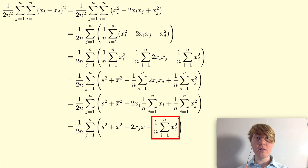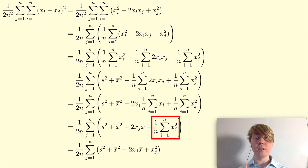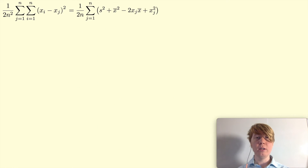Finally for the third inner sum, all you need to notice is that we're summing over i but xj squared doesn't depend on i, so you're going to end up with n lots of xj squared, and then multiplying by 1 over n, the 1 over n cancels with n, and all you're left with is plus xj squared. So we've dealt with all the inner sums — let me move this line up and start dealing with the outer sum over j.